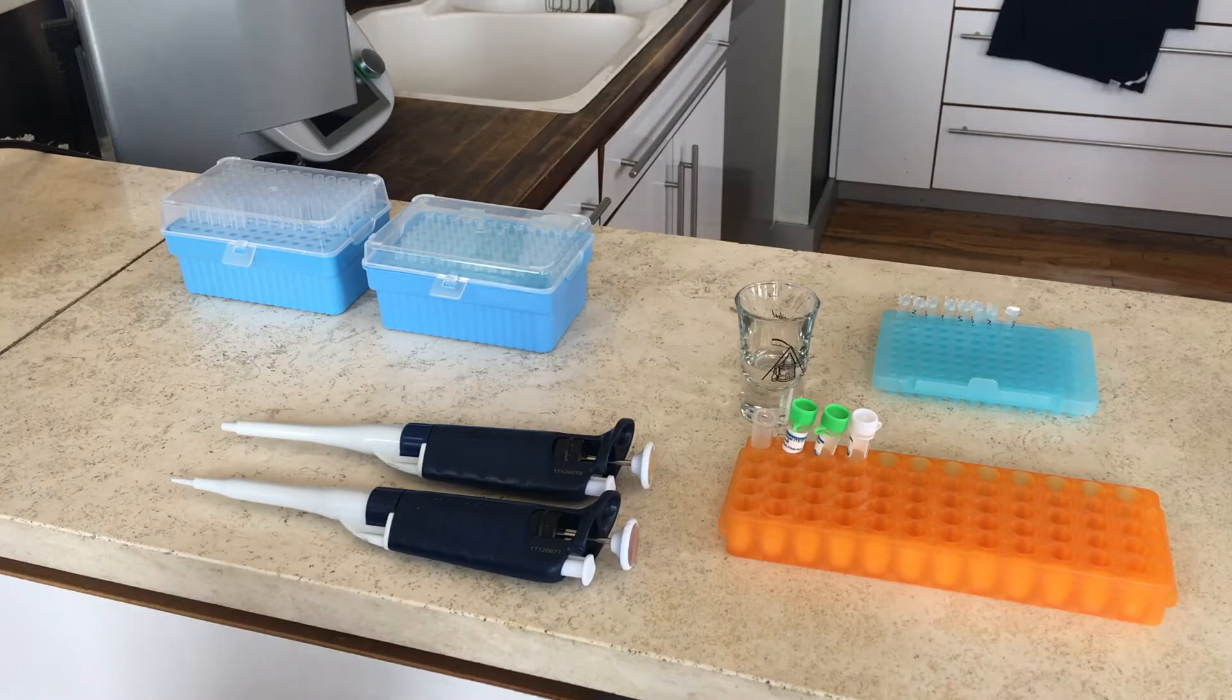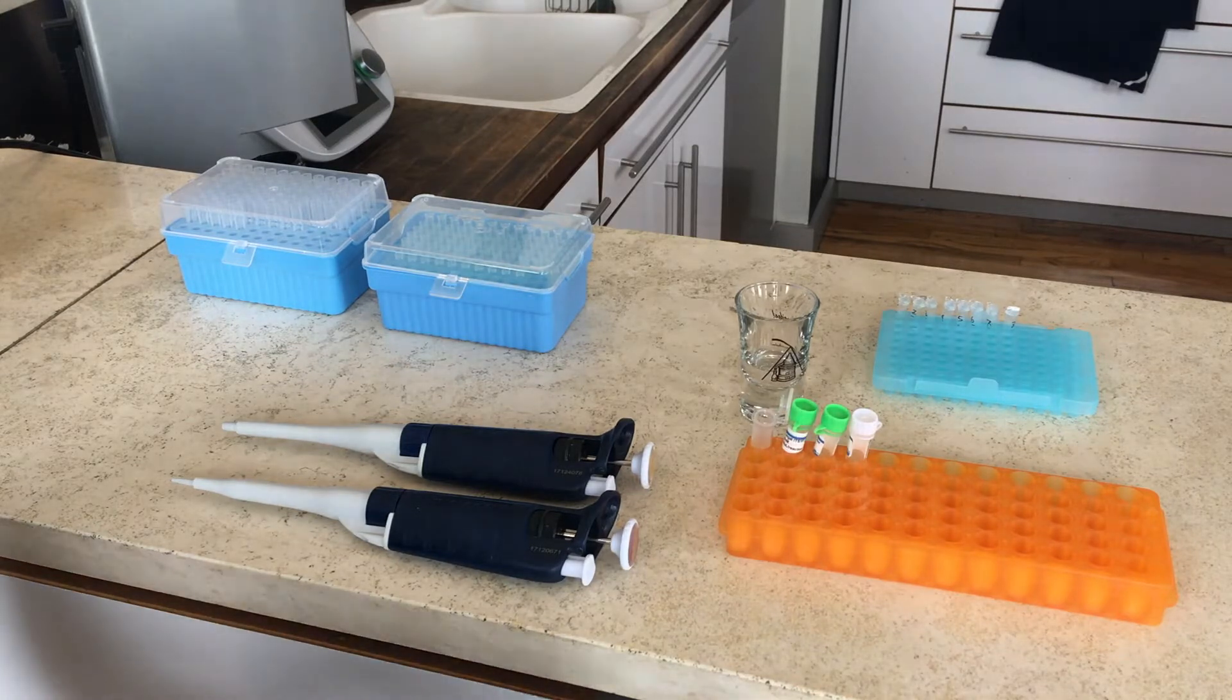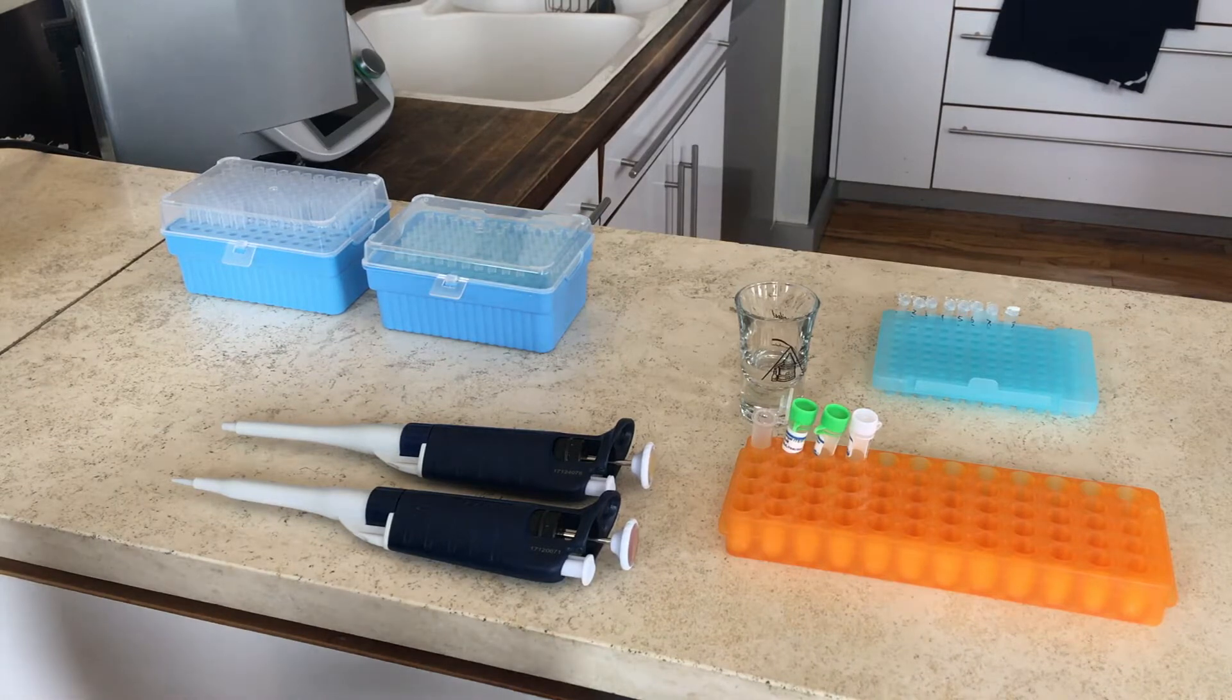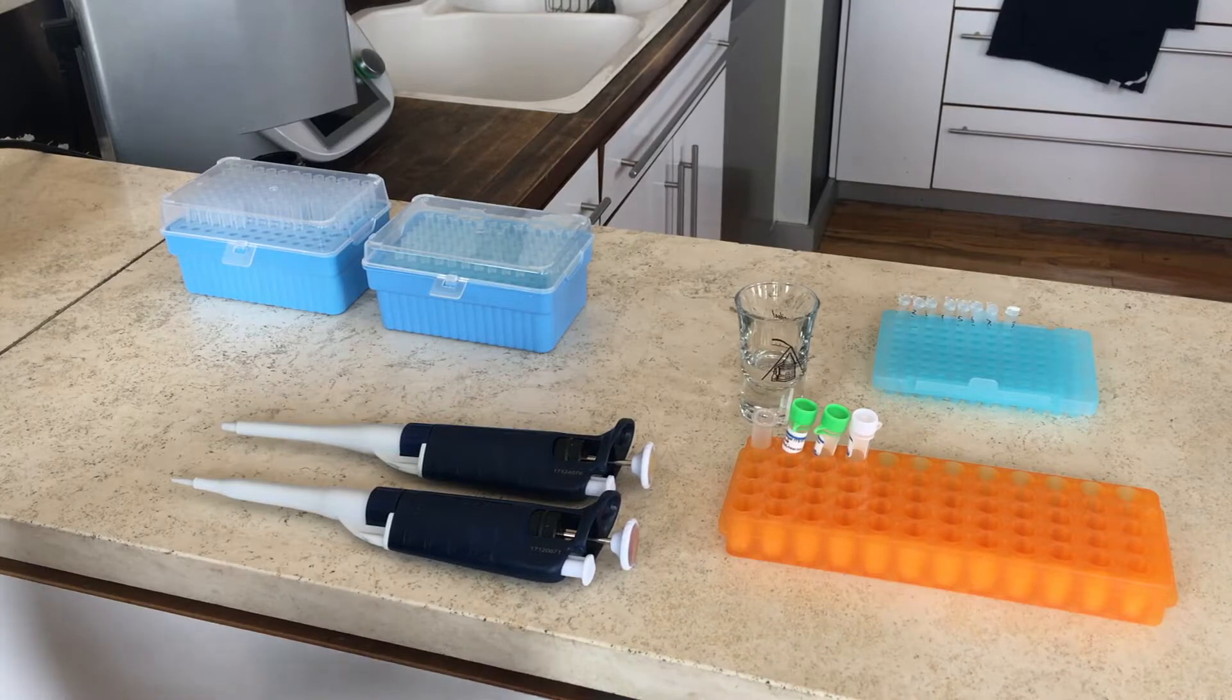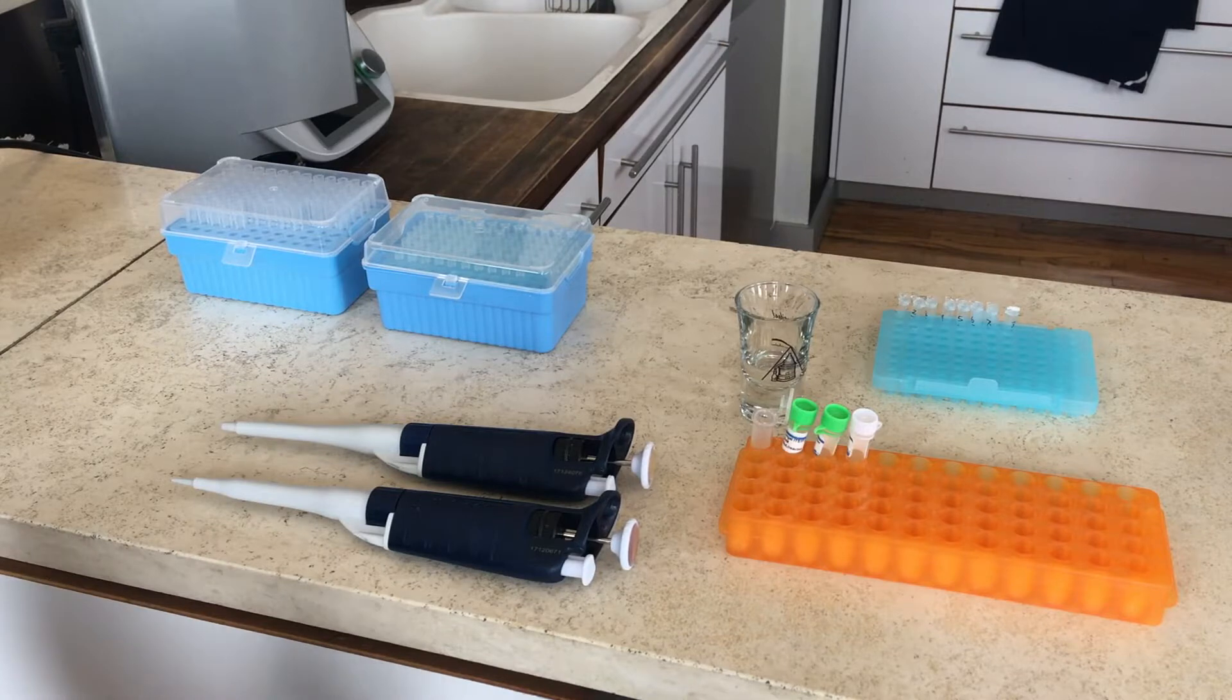The reason for that is my lab would like 10 microliters for forward read and 10 microliters for a reverse read, and then we're going to need an extra 7 for the gel electrophoresis. So that's how I get to that number. And if it's 27 per sample, you have to multiply that by 8 to get the final number of mix that you're going to need.